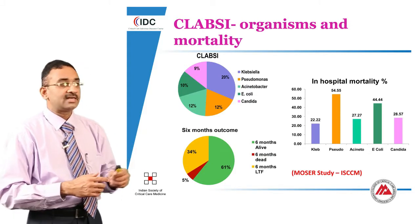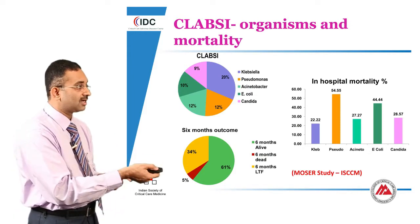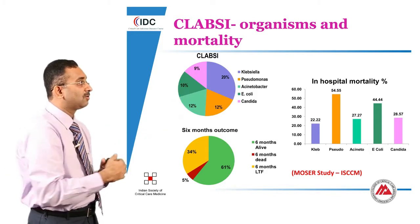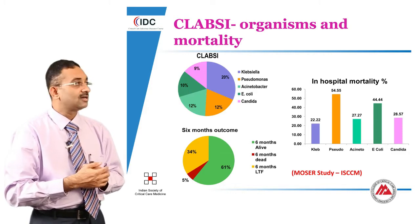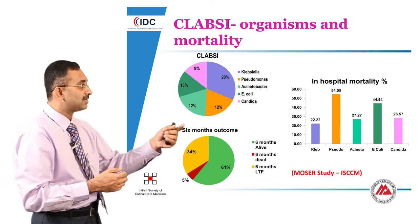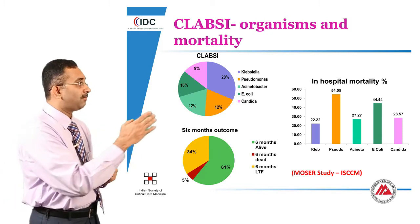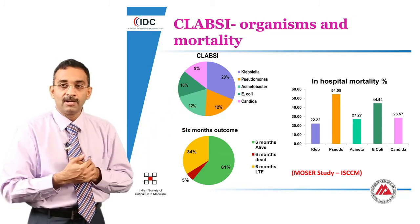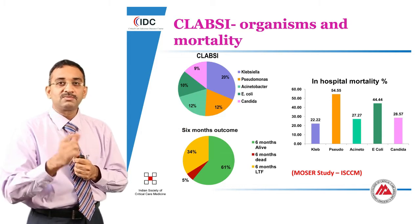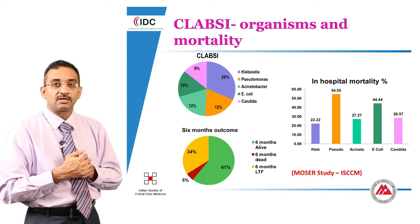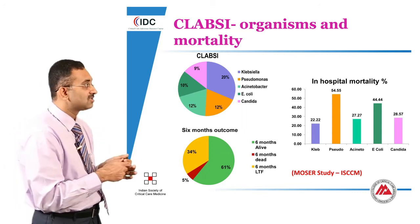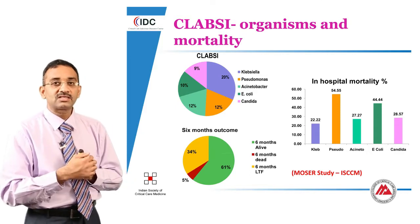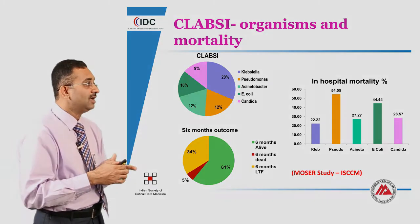What are the common organisms causing CRBSI in our country? From the MOSES study sponsored by the Indian Society of Critical Care Medicine, the number one bug is Klebsiella, which is expected, followed by Pseudomonas and Acinetobacter. An important point: gram-positive organisms form a very small proportion of the bugs causing catheter-related bloodstream infections. Right after the three gram-negatives comes E. coli, and then Candida — which is a common bug we need to be careful about.